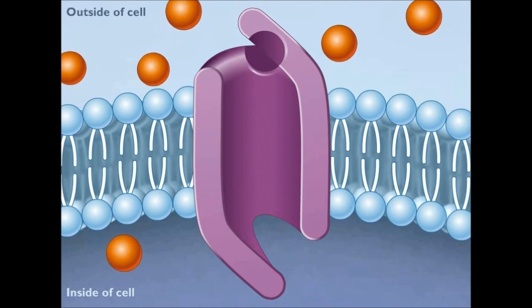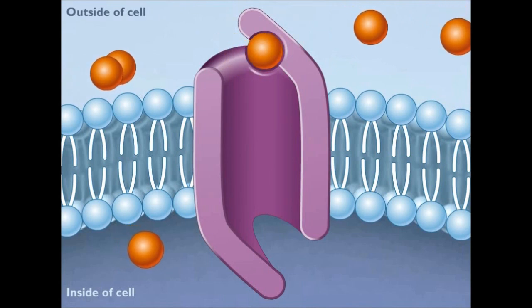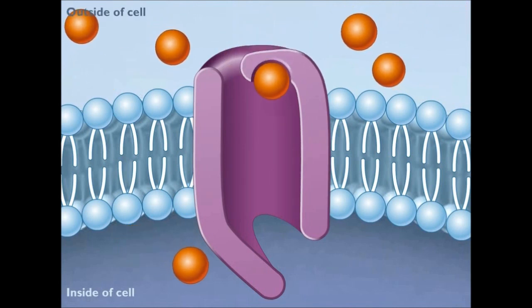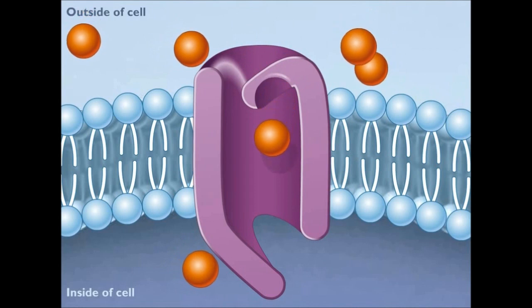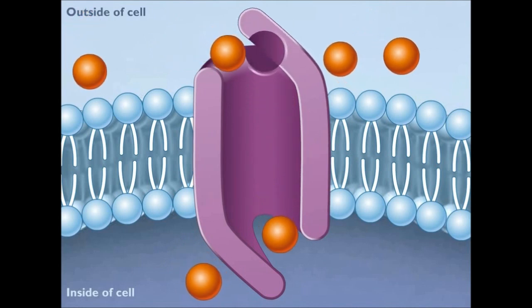These special carrier molecules that form the protein channel bind only to a specific molecule by changing shape and moving the molecule down its concentration gradient through the membrane into the cell where it is released.